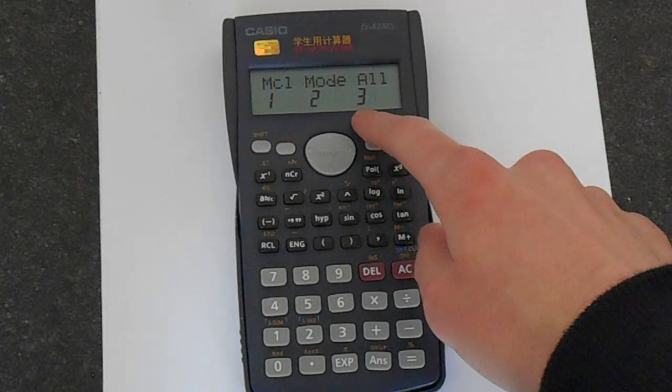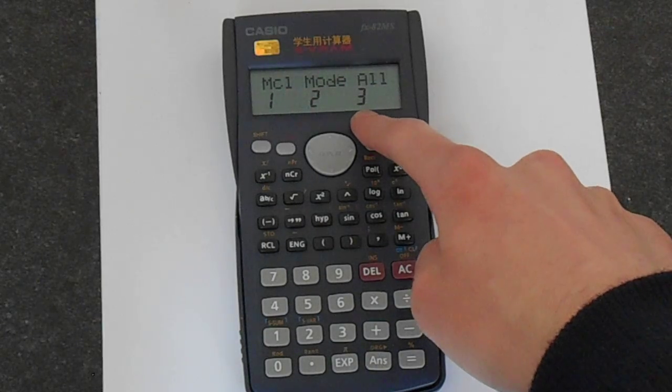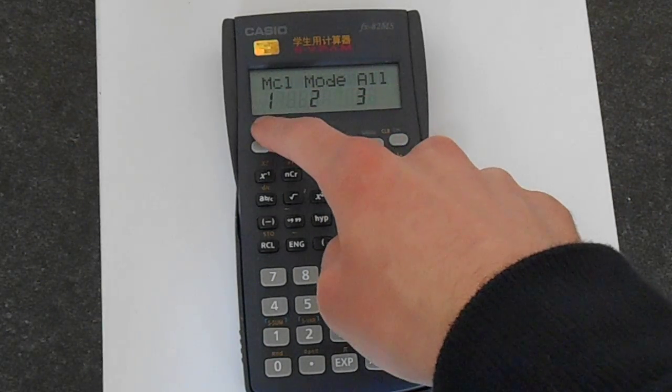So there's M clear, mode clear, and then clear all. If you want to reset the calculator you clear all. If you just want to clear the memories you would press 1.